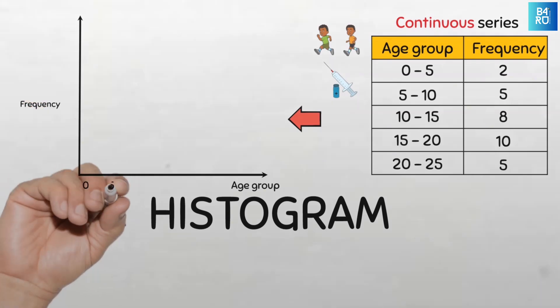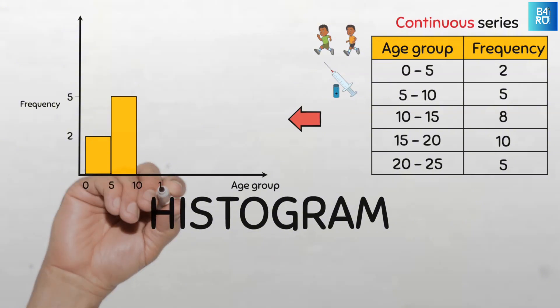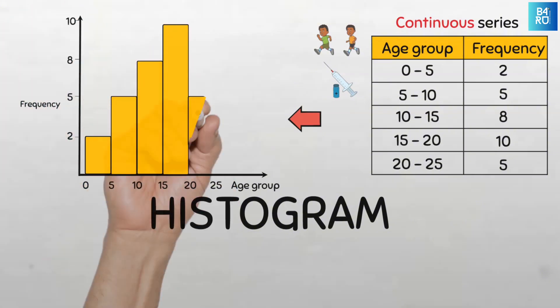So the first class of 0 to 5 months will be represented as a rectangular bar with a height of 2 units since the frequency is 2. For the group of 5 to 10 months, that's a frequency of 5, so we'll draw the height to be 5 points. And for the 10 to 15 months, that's 8 points, and so we'll draw it this way and so on.